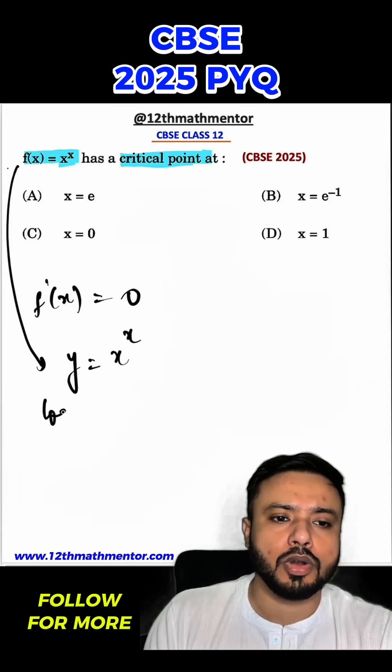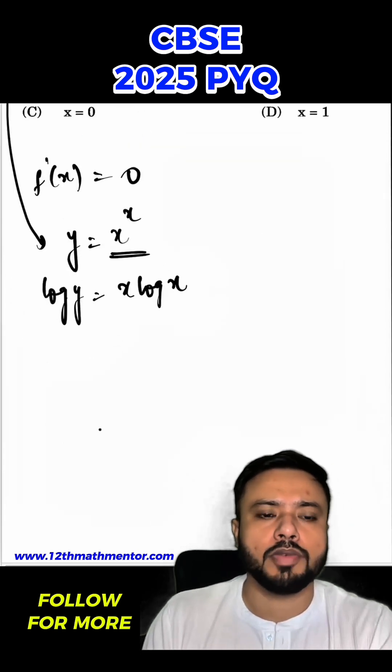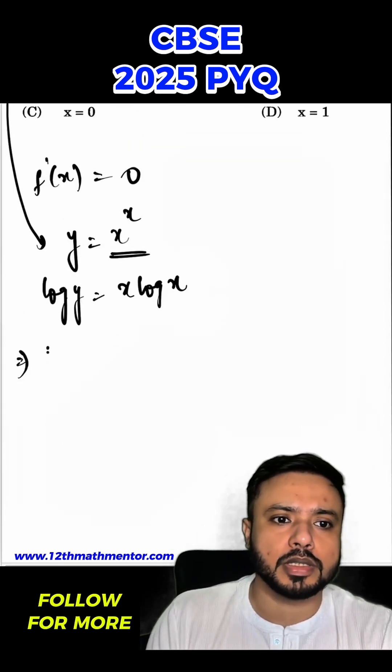So log y will be equal to x log x. Basically I have used logarithmic property over here, and now I will differentiate both sides with respect to x. So 1/y